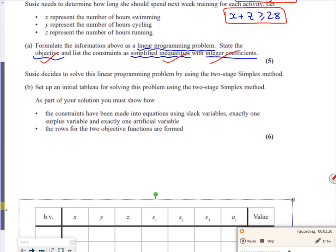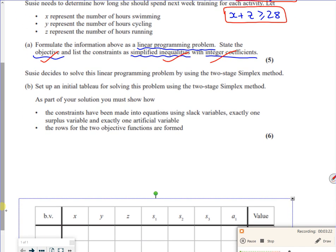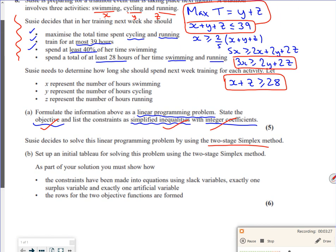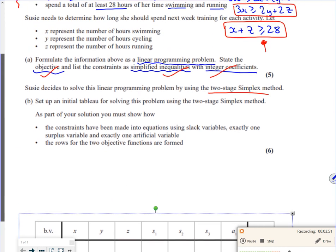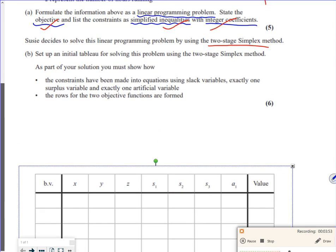Part B says Susie decides to solve this linear programming by using two-stage simplex. Remember, two-stage simplex is because of the greater than or equal to. We know we have less than or equal to for simplex because you're looking at something where you want to be solving within a finite region there. So we're going to set it up as a two-stage.